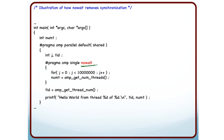There is also a 'nowait' option. With '#pragma omp single nowait', one thread executes the code inside the construct, but all other threads proceed ahead without waiting for that thread to finish.